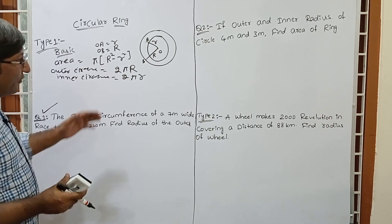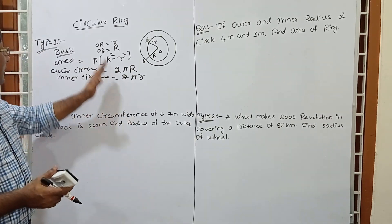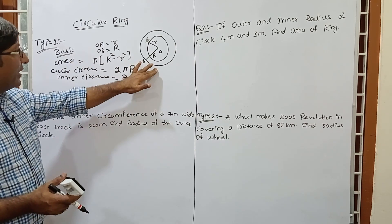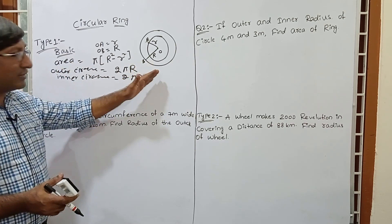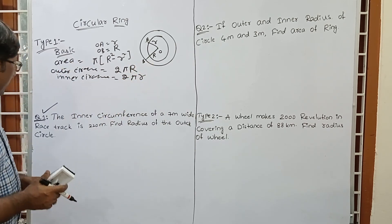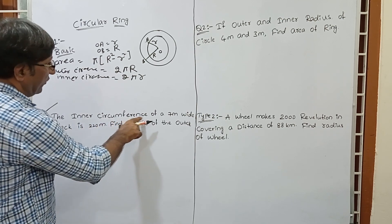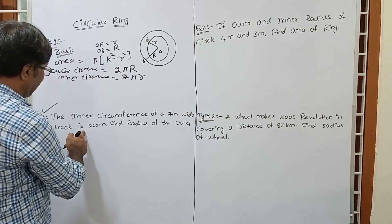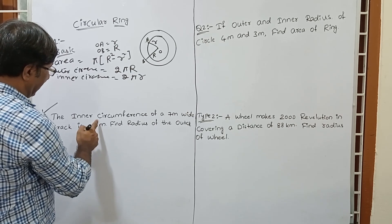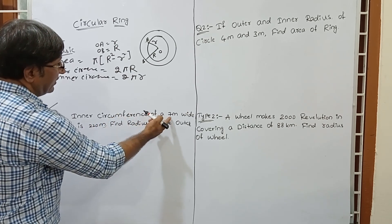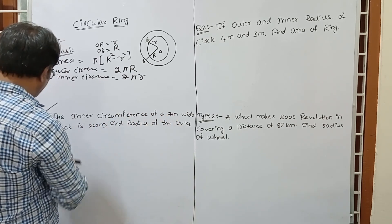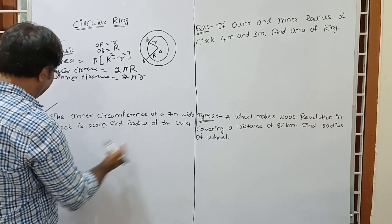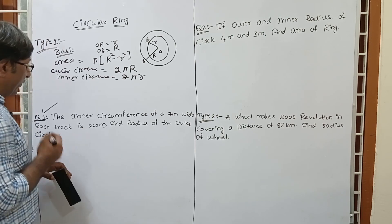Average questions are based on these formulas: area of ring, outer circumference, and inner circumference. The first question: the inner circumference of a 7 metre wide race track is 220 metres. Find the radius of the outer circle.